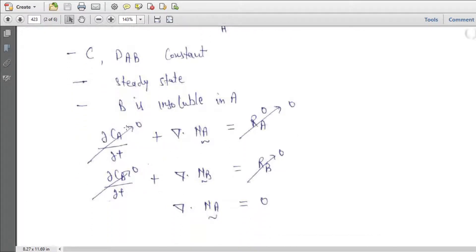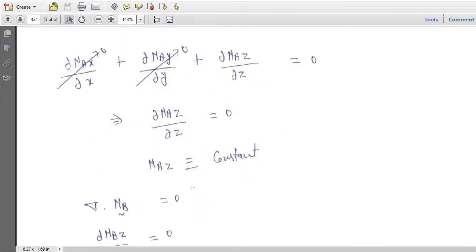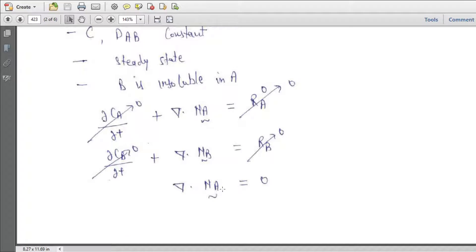So the governing equations are del CA upon del T plus del dot NA equal to RA, del CB upon del T plus del dot NB equal to RB. Del dot NA equal to zero. From here this is steady state, no reactions, so these are getting zero.